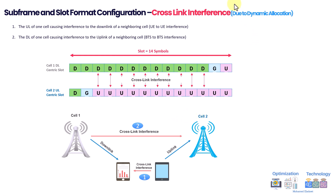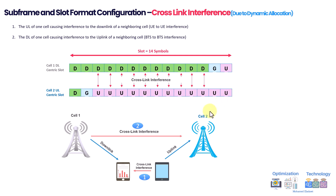This figure explains the concept of cross-link interference, which can occur in some scenarios with dynamic slot configuration in the network. Assuming we have two different cells — cell one and cell two — within one slot, the gNB of cell one decided to give 12 downlink allocations with one guard band, one flexible, and one uplink, while cell two decided to do the opposite: one downlink, one guard band, and the remaining as uplink.